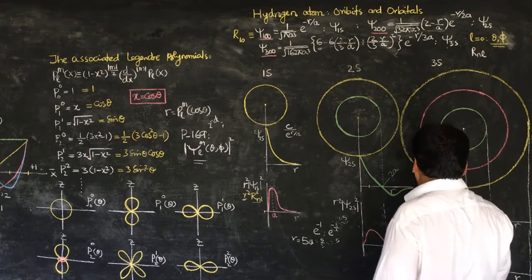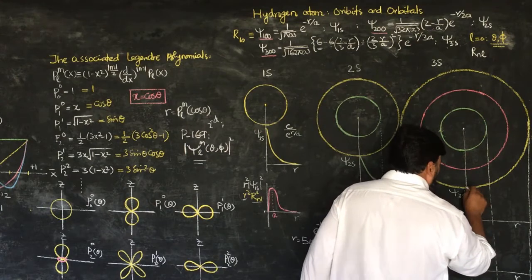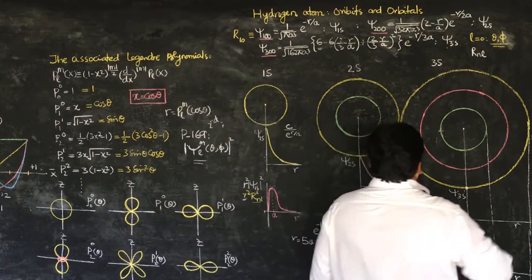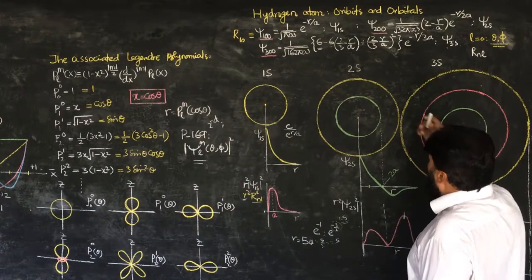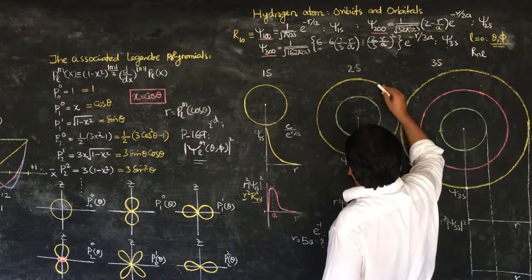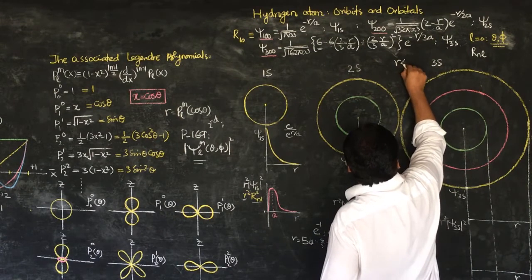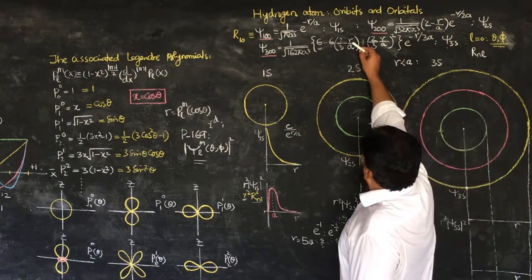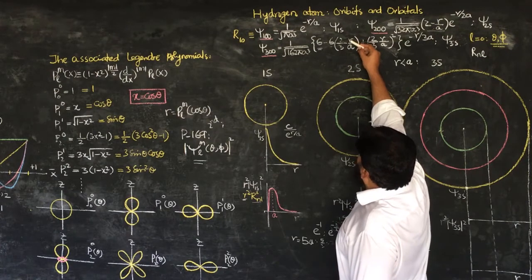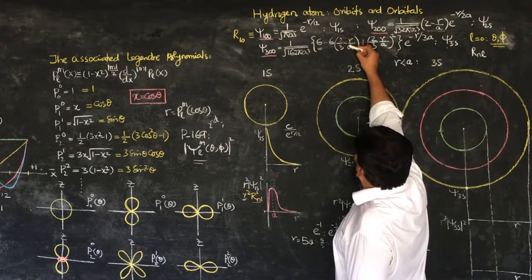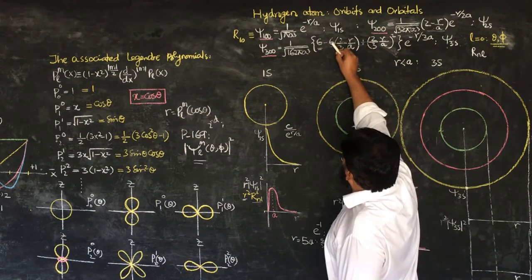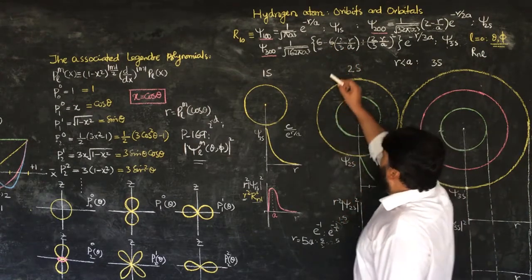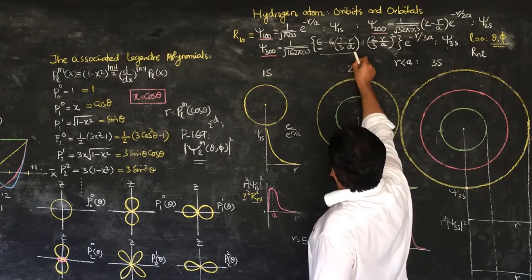At r=0 we have some constant value. As r is increasing but r is less than a, this value will be less than 1 because r is less than a. So whatever the multiplication of this with the other term will be, it will be less than 6 and the result of this value will be positive.